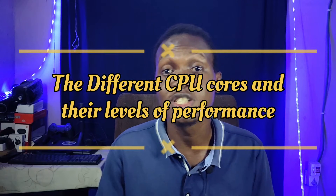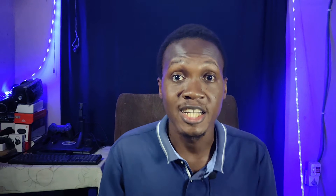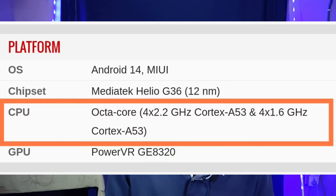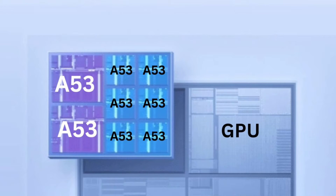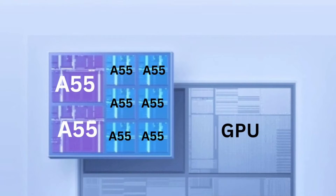There have been different types of CPU cores over the years, and they determine the type of performance you get. For those using entry-level phones that have Cortex-A53 and Cortex-A55 as their only CPU cores — you may not like what I'm telling you, but your phone is basically just for communication and light use. If you buy any phone with an SOC using only these CPU cores, you're not going to get much done with it.